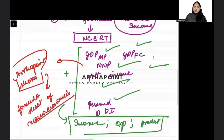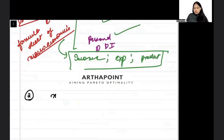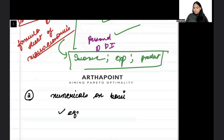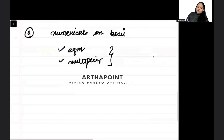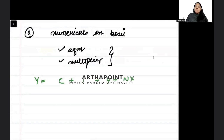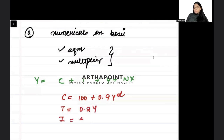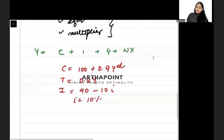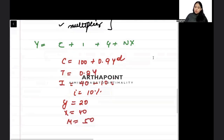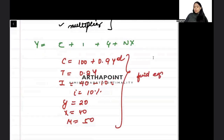You have to do this first. If I give you one equation — some functions like: consumption is equal to 100 plus 0.9Yd, tax is 0.2 times income, investment is 40 minus 10i, interest rate is 10%, government expenditure is 20, export is 40, import is 50 — I have given you some information and I will tell you: find equilibrium income.